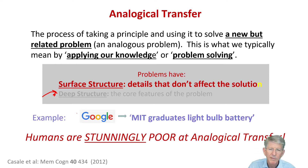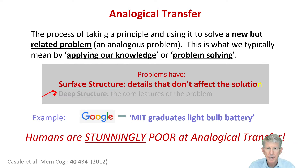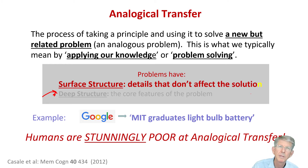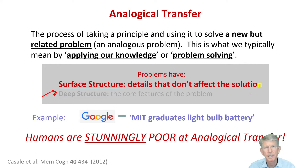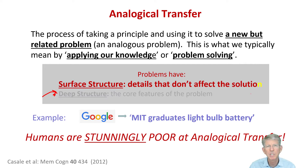If you want to have a little bit of fun with this, I recommend you go to Google at the end of this talk and type in MIT graduates, light bulb, and battery. There's a fun video there — it's just about three minutes long, and you'll see very bright people who know a lot about electricity who are unable to do a very simple task because they can't transfer their information to this new domain shown in that video.